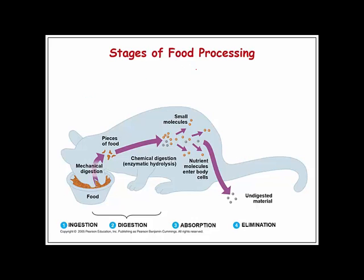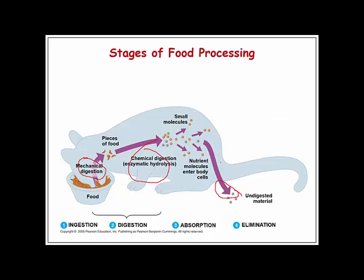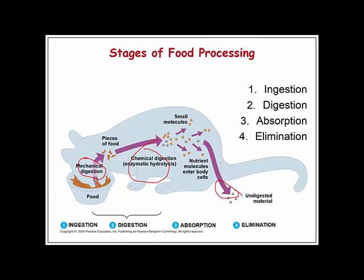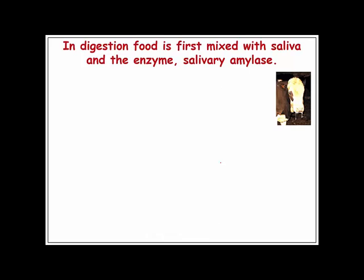There are stages of food processing: we have mechanical digestion — physically breaking food apart — and then chemical digestion through enzymatic hydrolysis. These small molecules are then absorbed through the GI tract into the circulatory system. Undigested materials are released, and the body can also put waste products into this stream. These four processes are called ingestion, digestion, absorption, and elimination.